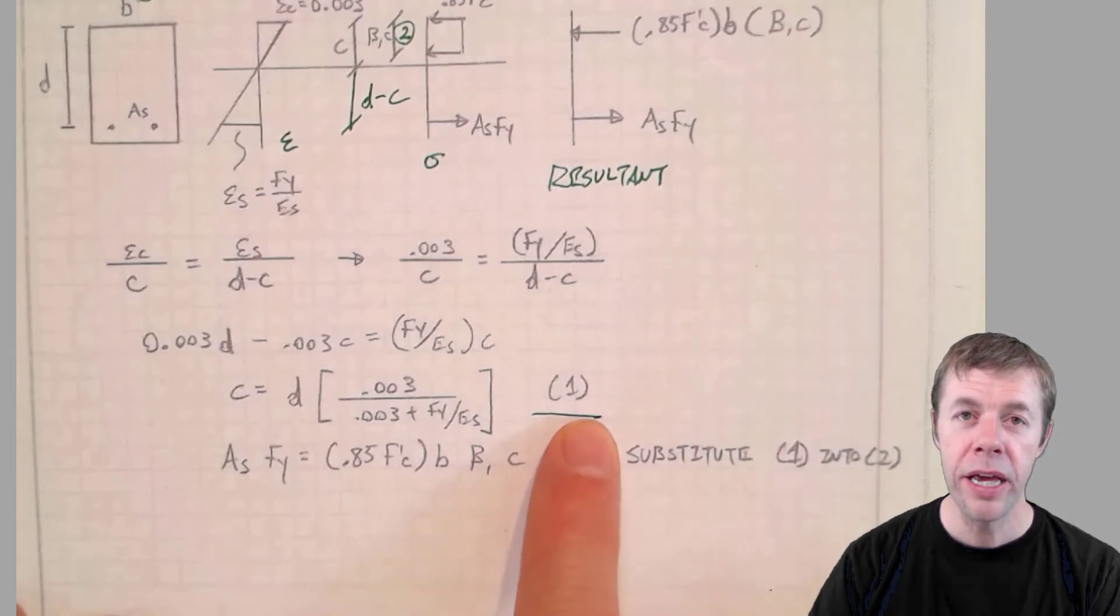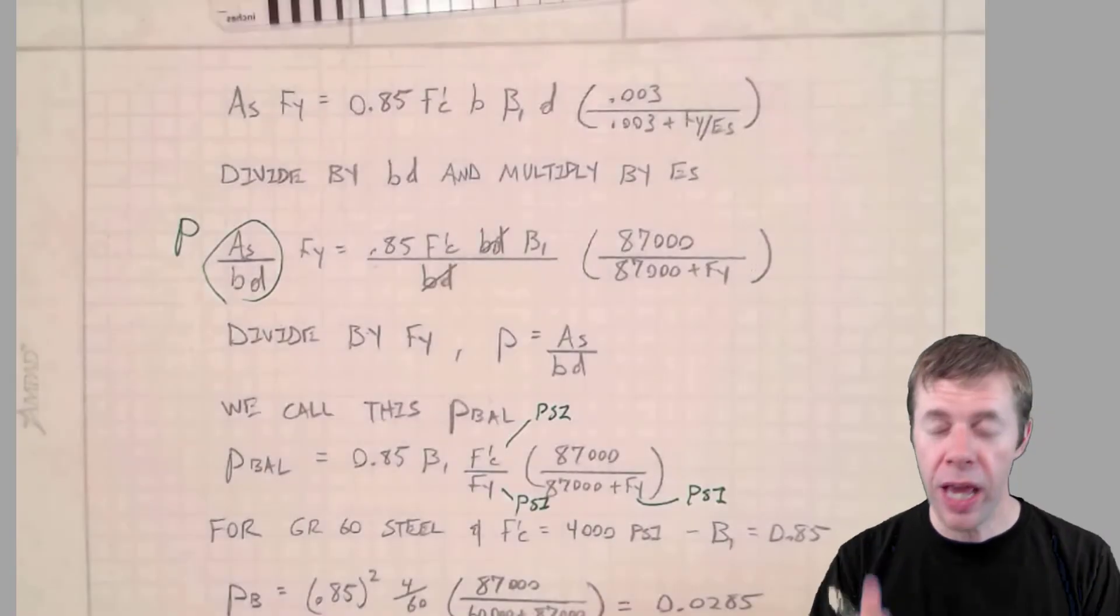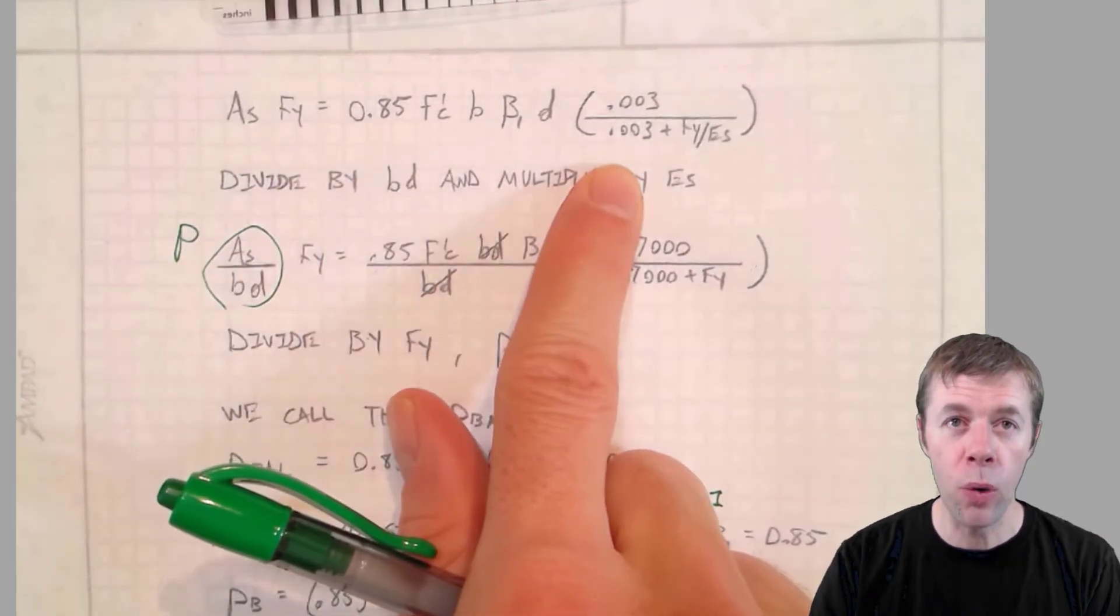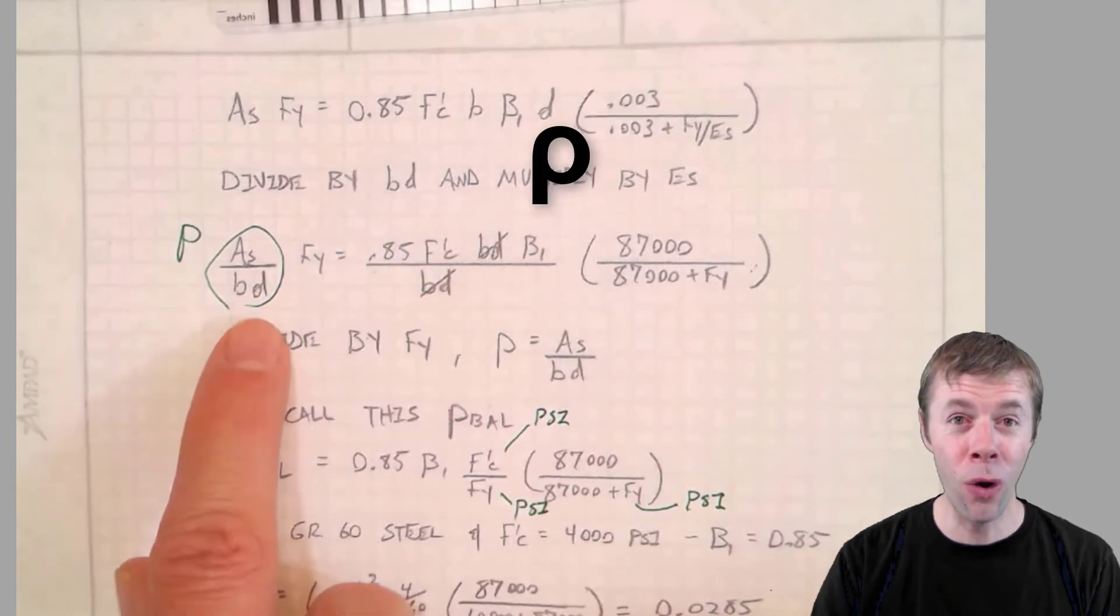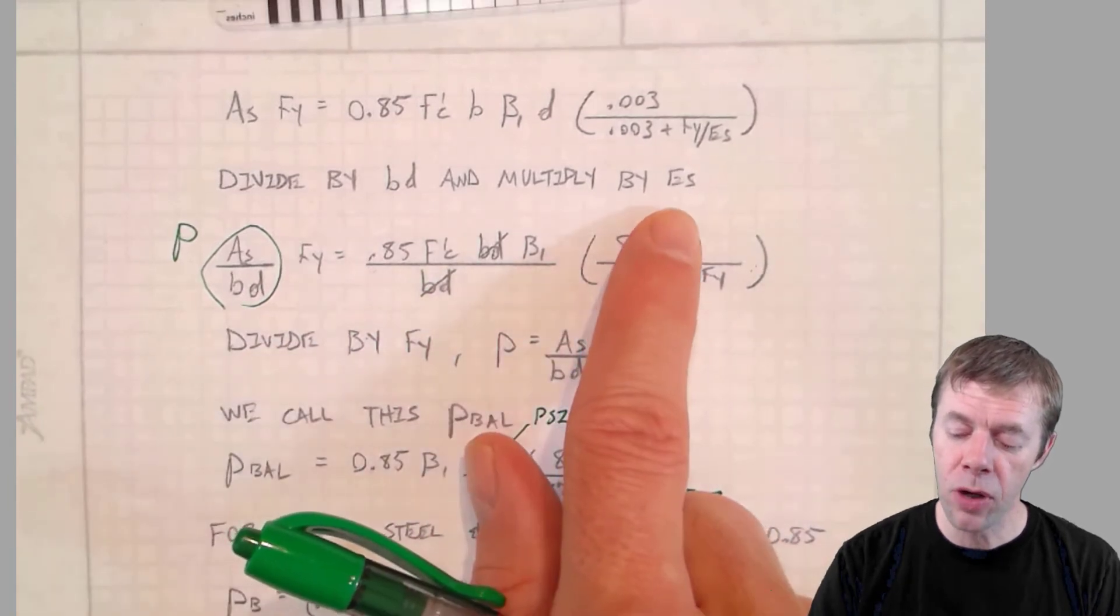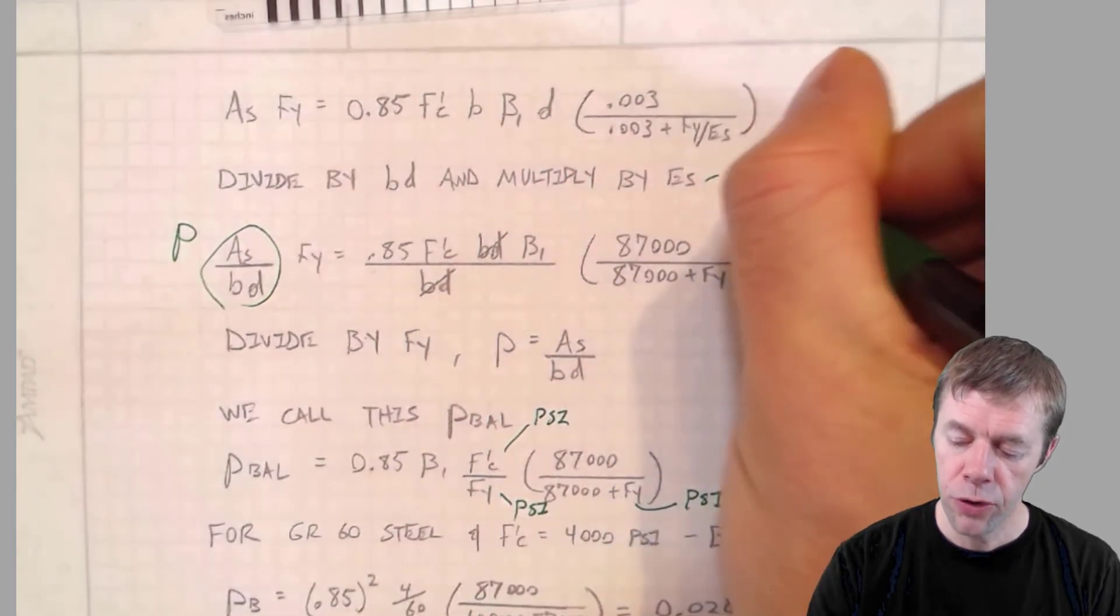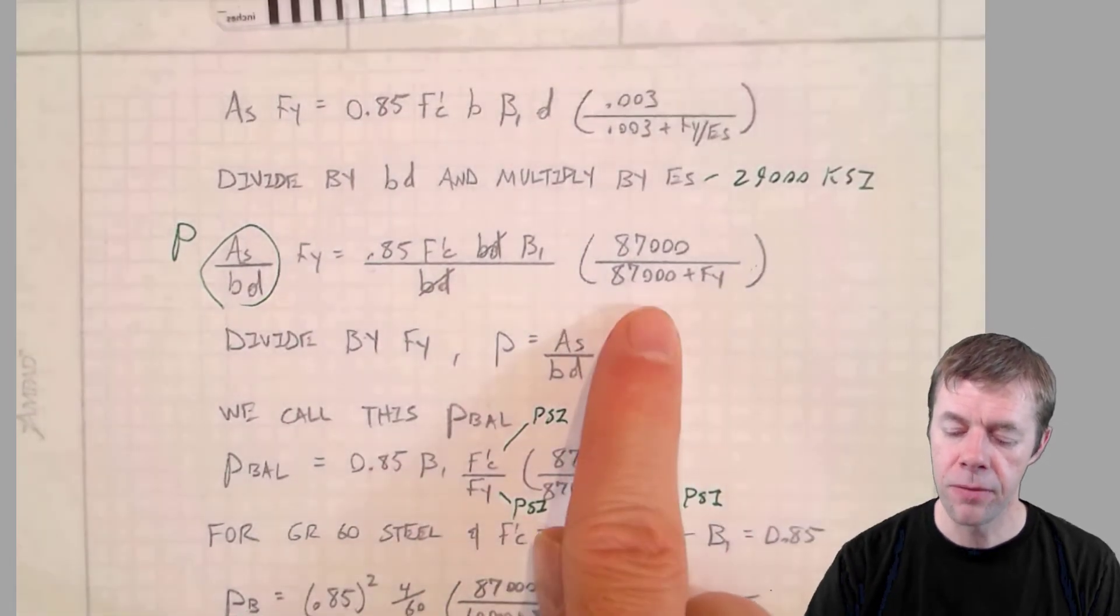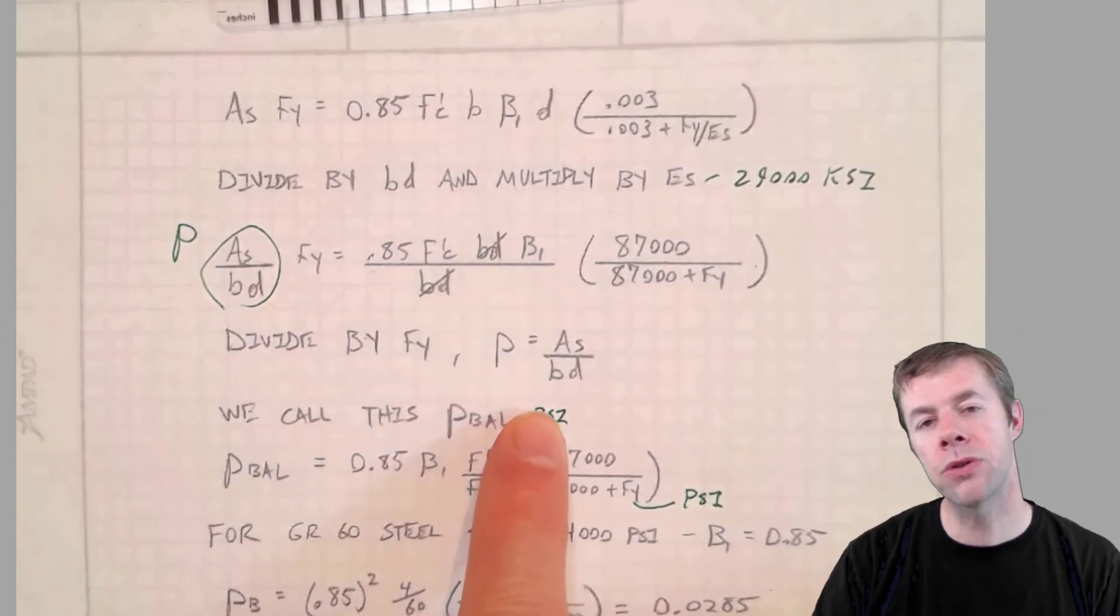Now we're going to substitute one into two on the next page. We're almost there. We're closing in. Here we got that ASFY. That's everything on the right. We plugged into the other equation. Now we're going to divide both sides by B and D. Why would we do this? So we can get rho, of course. We can make this equal to rho. How beautiful. We also are going to divide by epsilon S. We're going to recombobulate this equation right here. And make it look something like this. That's just 29,000. 29,000 KSI. That is the modulus of steel. It looks something like that. Now we're going to divide both sides by FY.